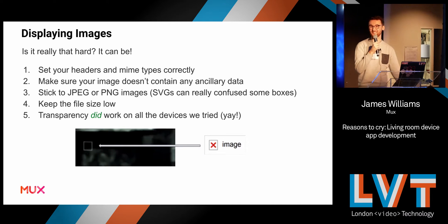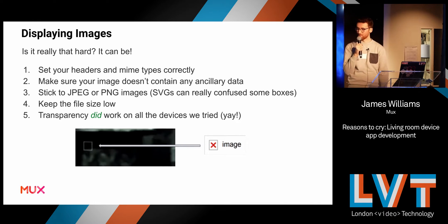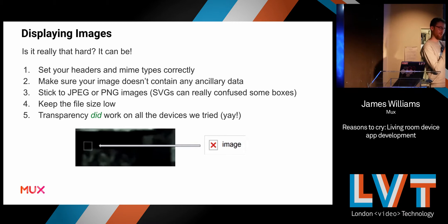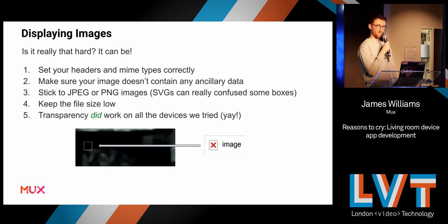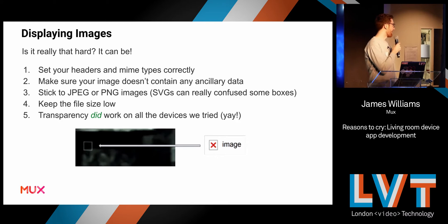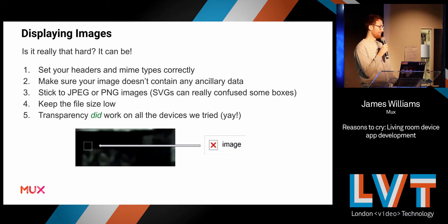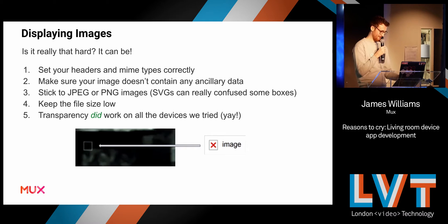Displaying images — most UIs have images in them, and this is actually difficult as well. There's one very popular TV manufacturer, specifically in the UK, that doesn't seem to like images with certain issues. I tried to load a particular image over DTT and it just said no. But on a different TV next to it with the exact same code, the image was there and looked fine. MIME types need to be correct. Ancillary data seems to be the real cause of the issue — if you've got things like comments in image files, this particular manufacturer just doesn't like it.